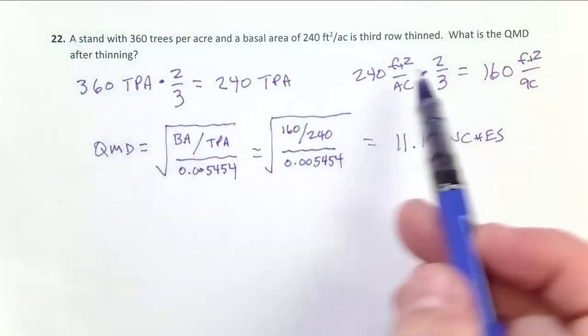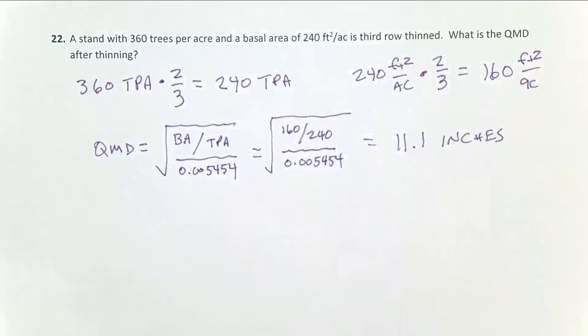Now, this step up here we did was not necessary if you remember the impact of a row thin on QMD. If you cut down a third of your biggest trees, a third of your smallest trees, and a third of your average trees, that row thin, that geometric thin, will not change the QMD of your stand.